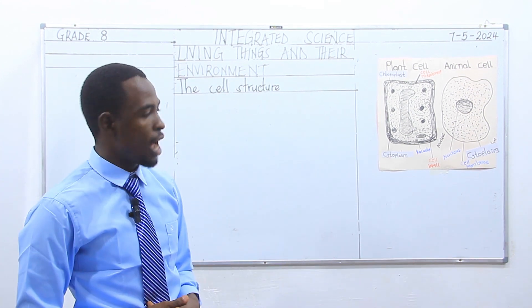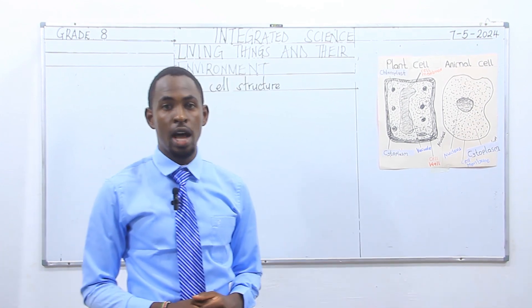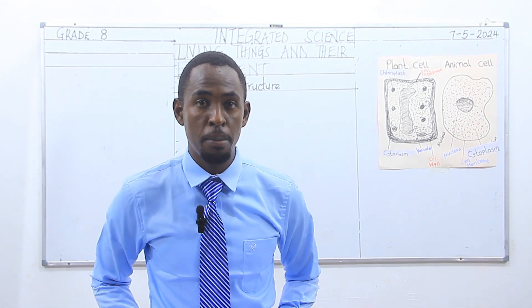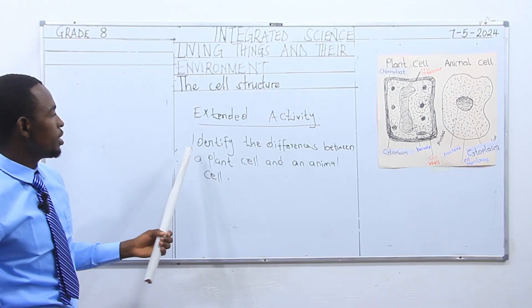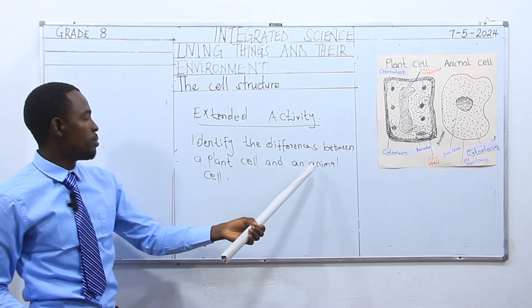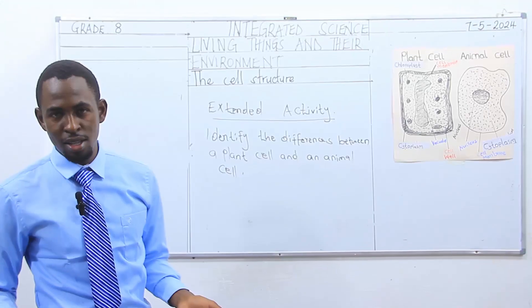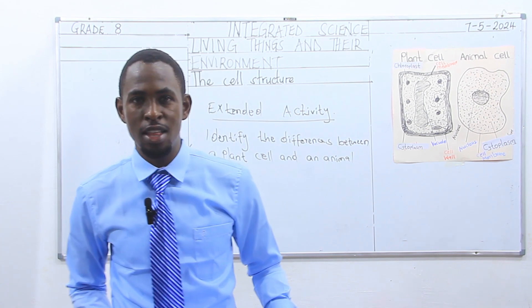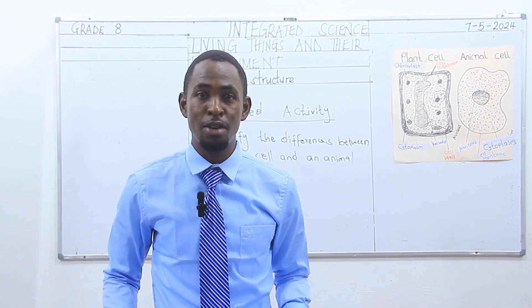Up to that point, I want to end our class for today. I am leaving you with an assignment: identify the differences between a plant cell and an animal cell. I hope you have enjoyed the lesson. Until next time, have a good time.